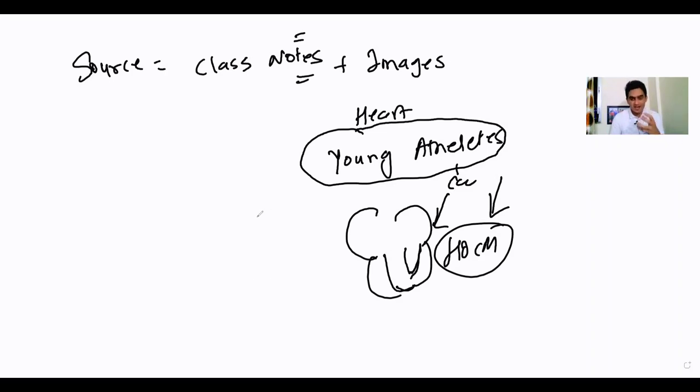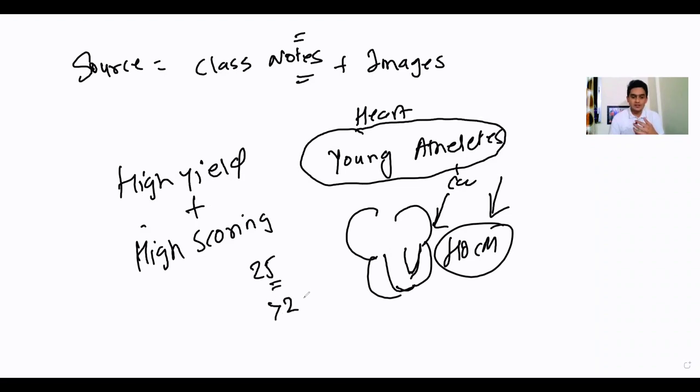Pathology is a very high yield and high scoring subject. A lot of toppers would agree with me that out of 25 questions from pathology, you can definitely score more than 20 with good preparation. This is why I call it a rank building subject - these subjects give you very good rank.